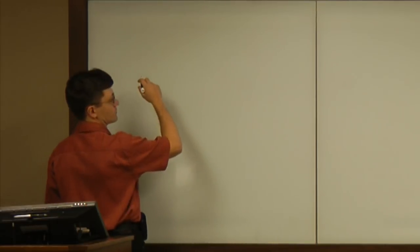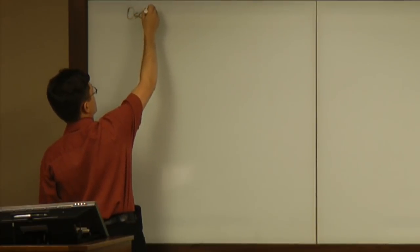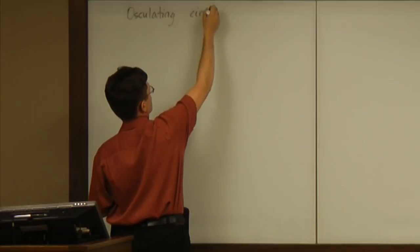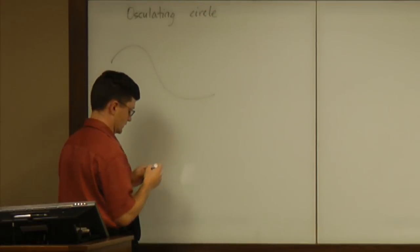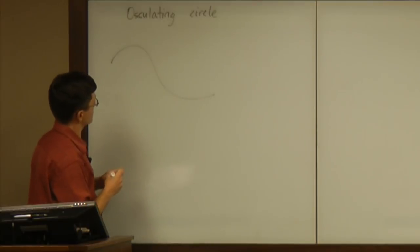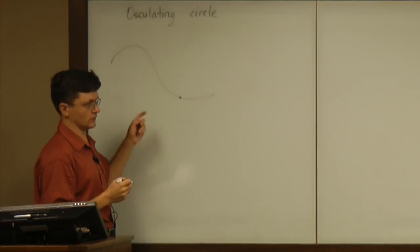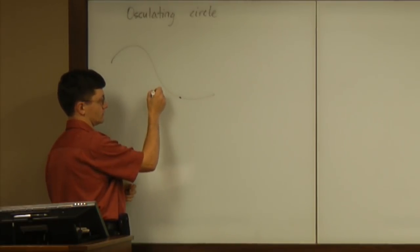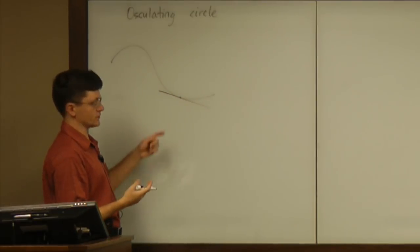Okay, so I never mentioned this osculating circle yet. If you have a curve in a plane, then at any point you may think about the best line approximating the curve, and that is the tangent line, and that is linear approximation.